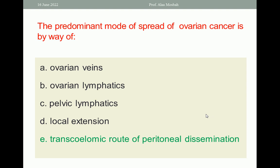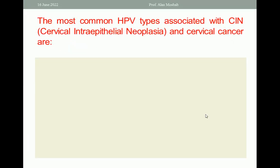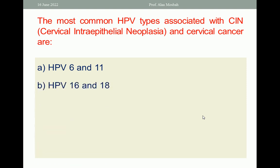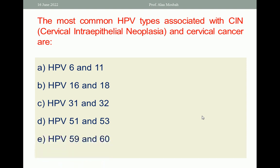The most common human papillomavirus types associated with CIN (cervical intraepithelial neoplasia) and cervical cancer are: A. HPV 6 and 11; B. HPV 16 and 18; C. HPV 31 and 32; D. HPV 51 and 53; E. HPV 59 and 60. The one best response is B — HPV 16 and 18.